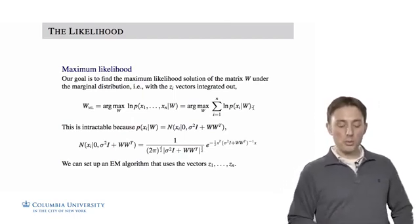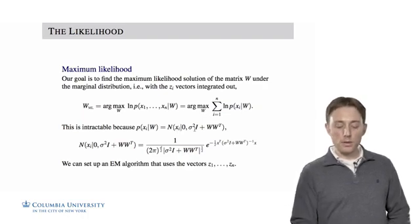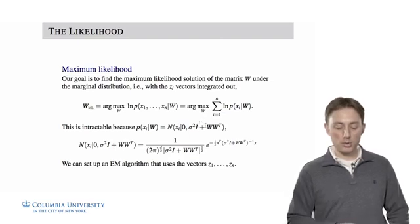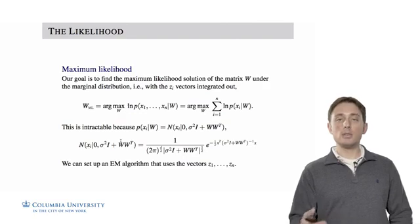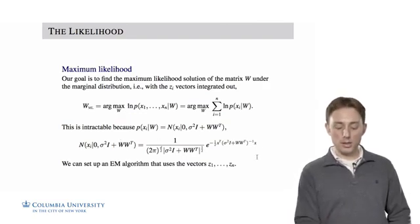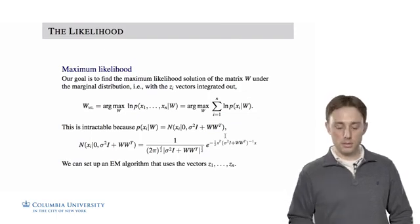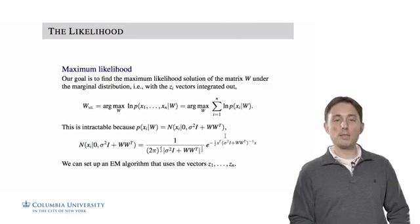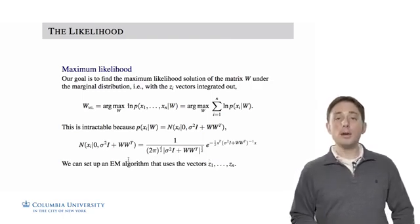However, if we actually calculated this marginal distribution, we would find that the likelihood of Xi given W is equal to a multivariate Gaussian with mean zero, because Zi has a zero mean, and covariance equal to sigma squared I plus W W transpose. If we actually looked at what this density looked like and then we take the log of it, we'll find that we can't solve it with respect to W analytically. We're in a bind, we can't do this and solve for W analytically. So what we're going to do is reintroduce these vectors Z as the missing part of our model, and then do EM on that.